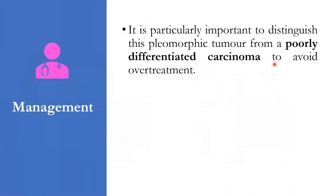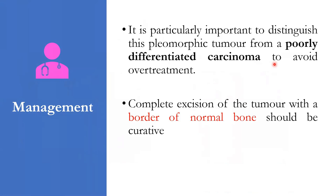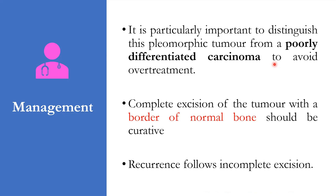Management of CEOT must be careful because it has to be differentiated from poorly differentiated carcinoma to avoid overtreatment. A thorough histopathological examination is required to distinguish it from carcinoma. Complete excision of the tumor with a border of normal bone should be curative. Enucleation and curettage alone will result in recurrence, so an aggressive form of management is required.